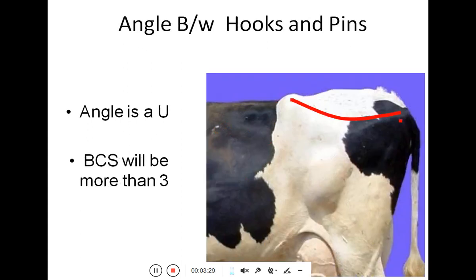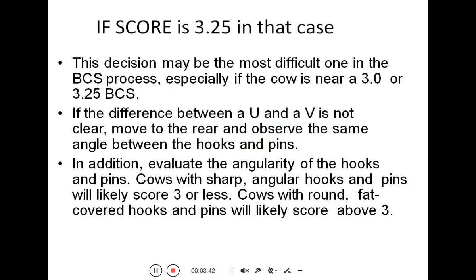If the angle between hooks and pins is U-shaped, the animal has a body condition score greater than 3. When the score is around 3.25, it can be difficult to classify. In this borderline case, we go to the rear view observation to determine whether the angle is U or V shaped.